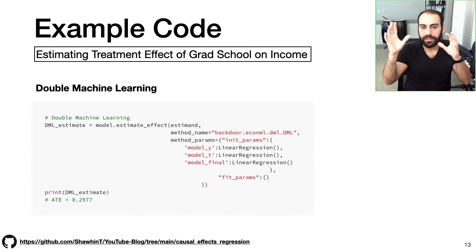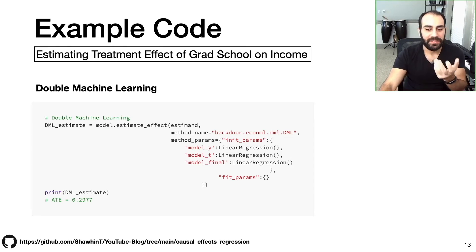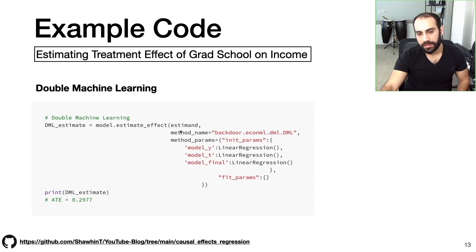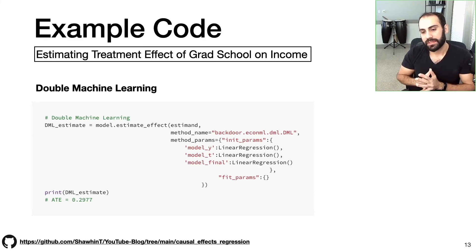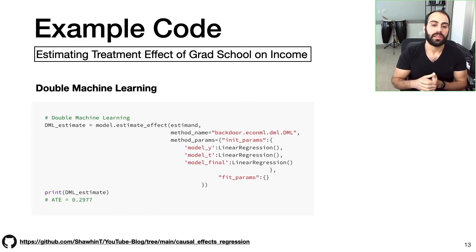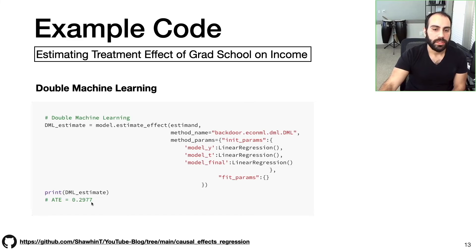Next we have double machine learning — the sophisticated approach. Again, we get the estimate through one line of code: we specify the method name as double machine learning from the EconML library, and define method parameters. Here I just use linear regression for everything, because the data is so simple — only three variables, two of them binary. Linear regression gave the best results here; double machine learning is a bit overkill for this simple example, but would have more utility in more complicated contexts. The average treatment effect is very similar to what we saw with linear regression, which isn't surprising since we used linear regression for all sub-models.